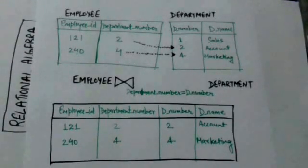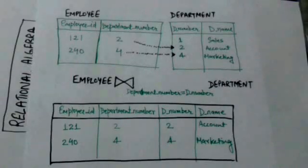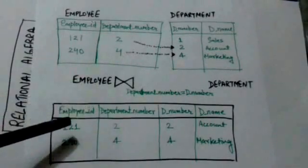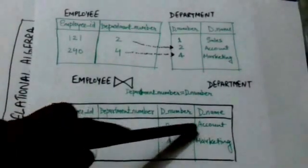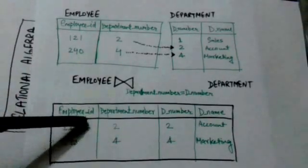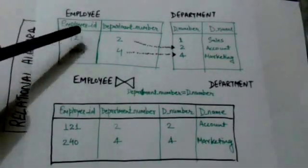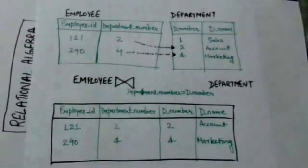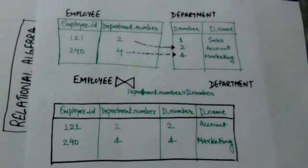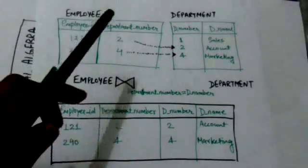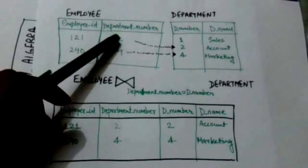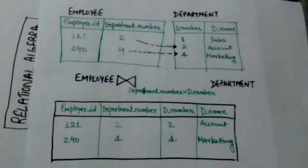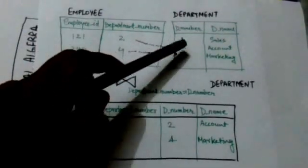The resulting relation contains one tuple for each combination of tuples of relations employee and department which satisfies the given join condition. For example, notice this tuple of the resulting relation. This tuple is formed by combining this tuple of the employee relation with this tuple of the department relation, and it also satisfies the given join condition — that is, the value of the department number attribute of the employee relation is the same as the value of the D number attribute of the department relation.